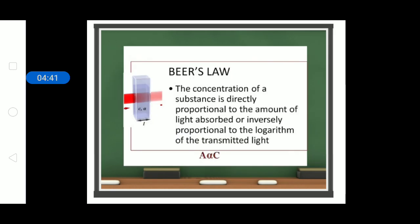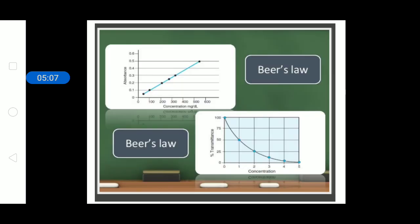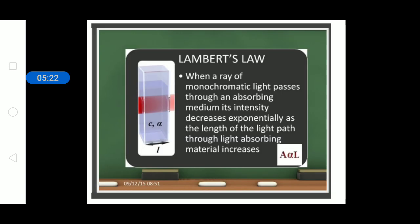Beer's Law states that the concentration of a substance is directly proportional to the amount of light absorbed, or inversely proportional to the logarithm of the transmitted light. From Beer's Law, the amount of light absorbed is directly proportional to the concentration of the solution. As shown in the graphs, with increasing concentration, light absorbed increases, producing a linear graph inclined at an angle.